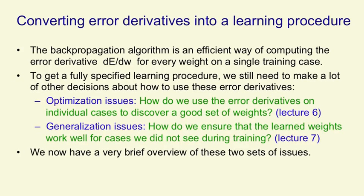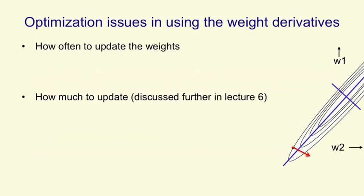What I'm going to do now is give you a very brief overview of these two sets of issues. Optimisation issues are about how you use the weight derivatives. The first question is, how often should you update the weights? We could try updating the weights after each training case. You compute the error derivatives on a training case using backpropagation, and then you make a small change to the weights. Obviously this is going to zigzag around, because on each training case you'll get different error derivatives. But on average, if we make the weight changes small enough, it'll go in the right direction.